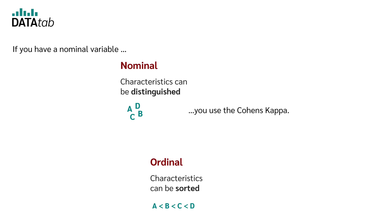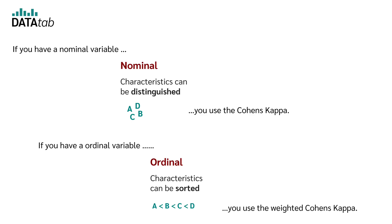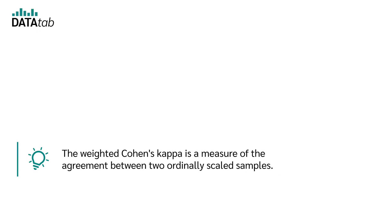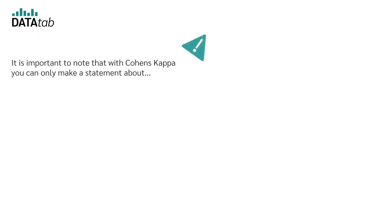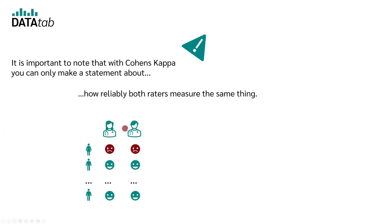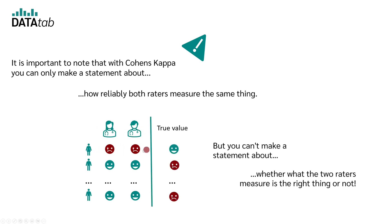If you have a nominal variable, you use Cohen's kappa. If it is an ordinal variable, you use the weighted Cohen's kappa. The weighted Cohen's kappa is a measure of the agreement between two ordinally scaled samples. It is important to note that with Cohen's kappa, you can only make a statement about how reliably both raters measure the same thing, but you cannot make a statement about whether what they measure is the right thing or not.